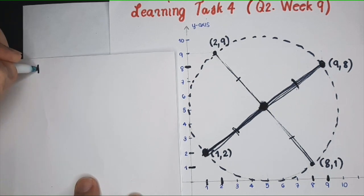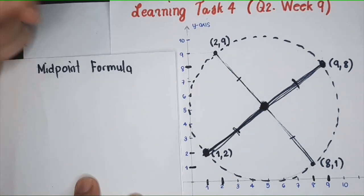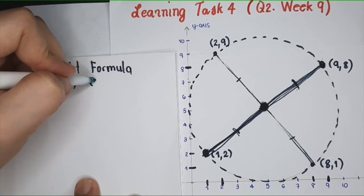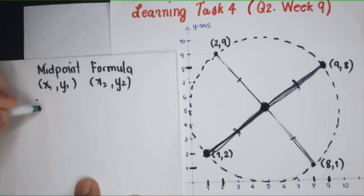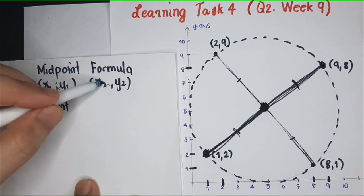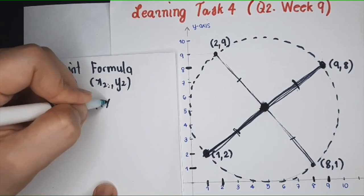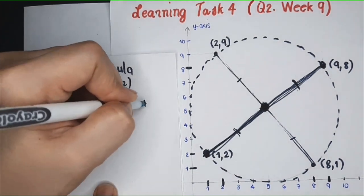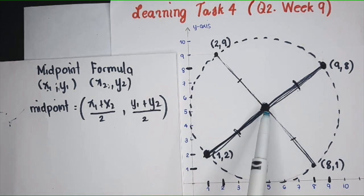This is what the midpoint formula says. If these are the endpoints of our line segment, the midpoint has coordinates: x1 plus x2 divided by 2 for the x-coordinate, and y1 plus y2 over 2 for the y-coordinate. This formula gives us the coordinates of the midpoint.